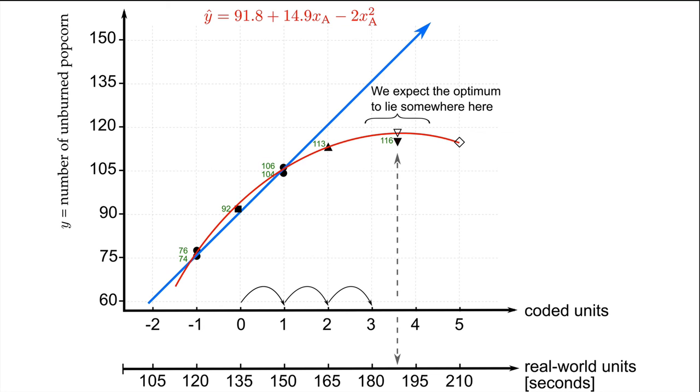But remember, always predict first. And we can predict with the current model, shown here in red, that we should get a value of... That's right. You should have predicted a value of 116 using that equation. When you actually run the experiment, you get a value of 109, shown with the diamond symbol here on the plot. Aha, this confirms that we've reached the optimum.